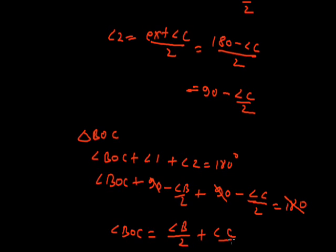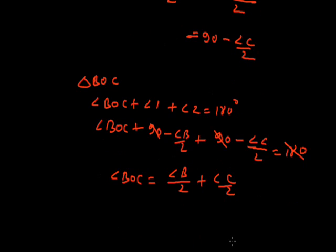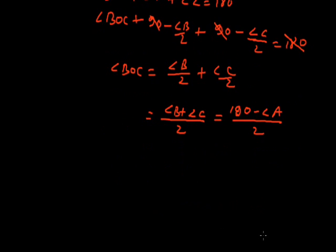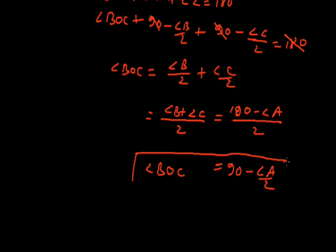Taking the LCM we get (angle B plus angle C) divided by 2. Angle B plus C can be written as (180 minus angle A) divided by 2, which equals 90 minus angle A by 2. So angle BOC equals 90 minus angle A by 2. This is the proof.